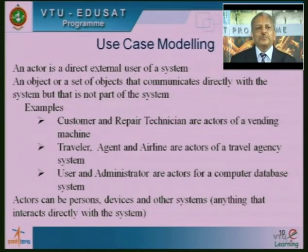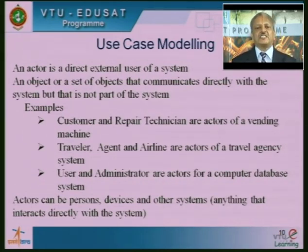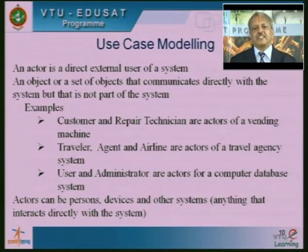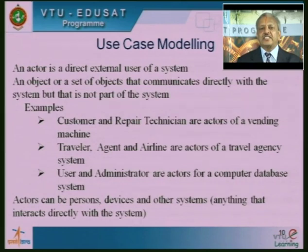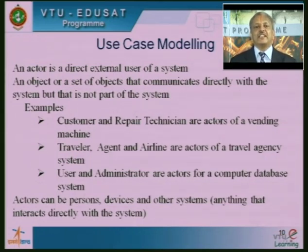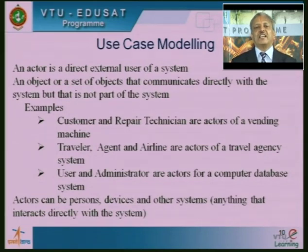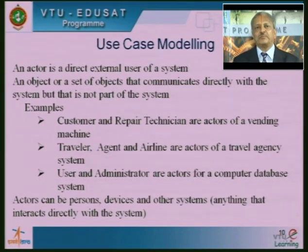More details about actors: an actor is a direct external user of a system. The meaning of direct external user is that if a repair person is sent by a manager, the manager is not an actor because the manager has interacted outside the system with the technician. The technician is actually the external user. An object or set of objects that communicates directly within the system but is not part of the system. Examples: customer and repair technicians are actors of a vending machine; traveller, agent, and airline are actors of a travel agency system; user and administrator are actors for a computer database system; stock clerk and customer are actors for an ATM system.